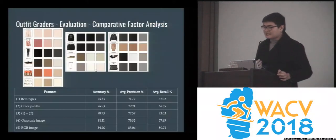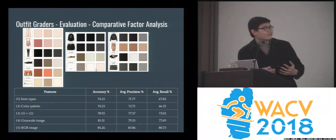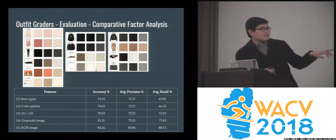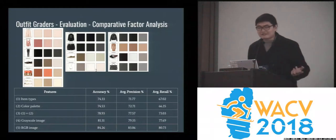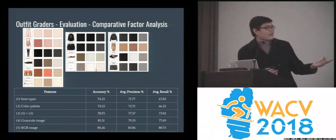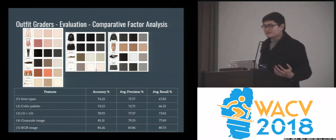In addition to accuracy, we compare the contribution of individual factors for each item — for example, item types, color palette, grayscale image, and RGB image. RGB image gives the best performance as expected, but item types and color palette have similar importance to each other.